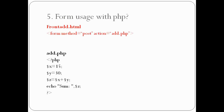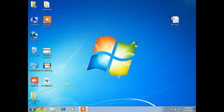Fifth step is form usage with PHP. You need to create two pages - one HTML and one PHP. In the HTML file (add.html), use form method equal to POST and action equal to 'add.php'. In action, specify the PHP server-side program. When you click Submit, through the POST method the action is taken. In add.php, write the addition program.